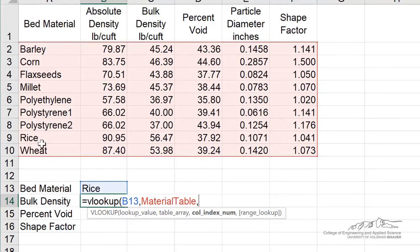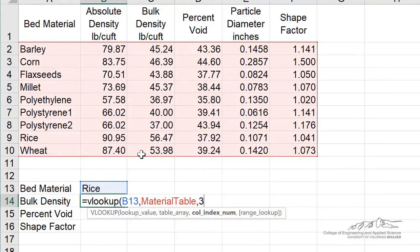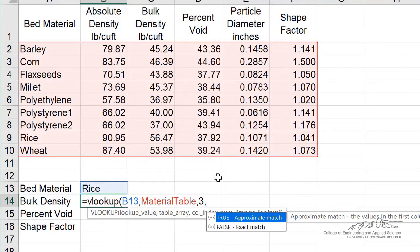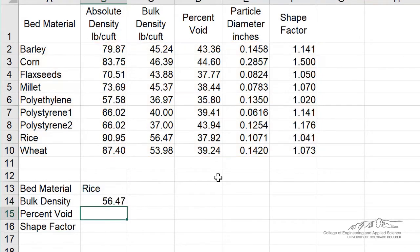We are then, we're wanting to output, so it's going to find rice in the 1, 2, 3, 4, 5, 6, 7, 8th row. Bulk density is what we're trying to find. Bulk density is found in the third column of our table, so I'm going to do a 3. Now there's a last argument here, which I would recommend using false because it basically stipulates that you want it to find an exact match, and we end up with the bulk density of rice is 56.47, which is here in cell C9.